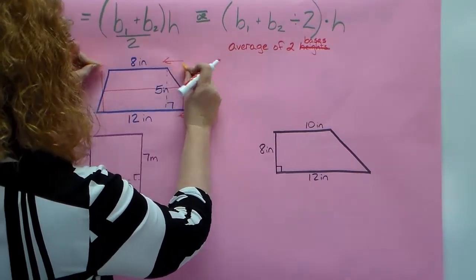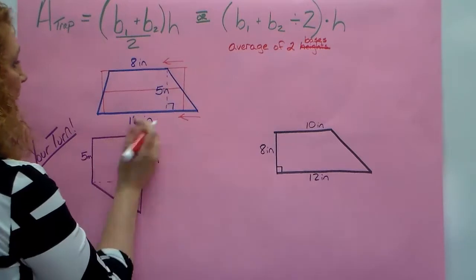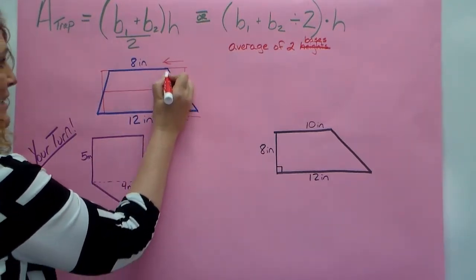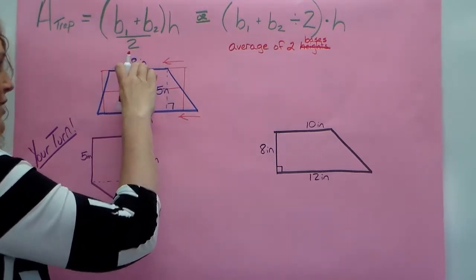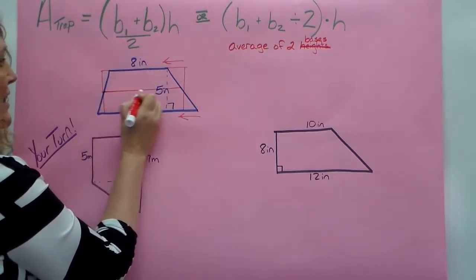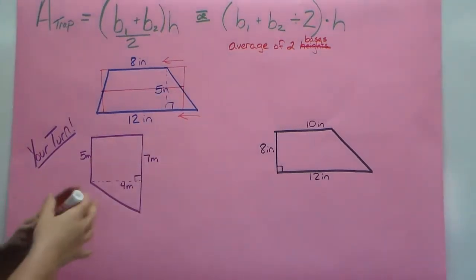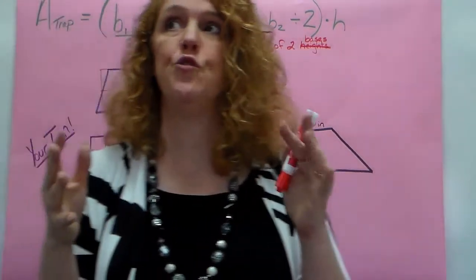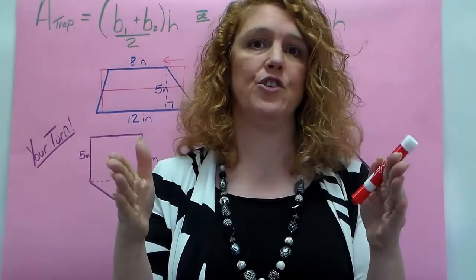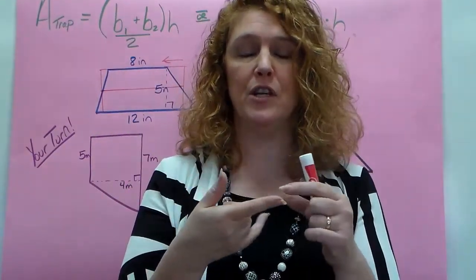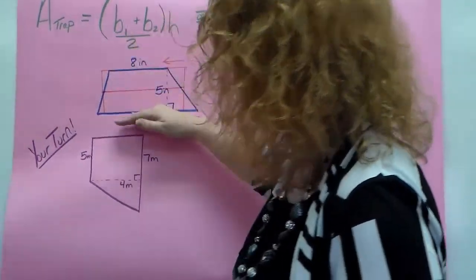I would have a rectangle that had the height of the trapezoid and the length of the average of these two sides, this length here. So in order for us to find how wide that rectangle should be, we have to find the average of the top and the bottom. If your parallel sides are top and bottom, you're going to find those two sides.